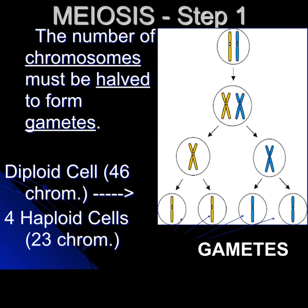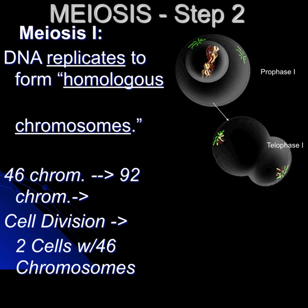The cells at the bottom would be called gametes. In meiosis step two, the DNA replicates to form homologous chromosomes. The 46 chromosomes actually go up to 92, but they're stuck together in that X shape. Then cell division takes place. Homologous chromosomes are separated, and now we end up with two cells with 46 chromosomes in them, but half of those are identical.